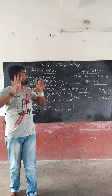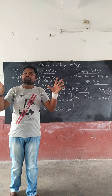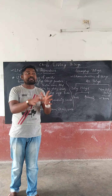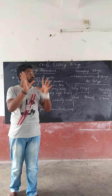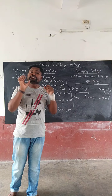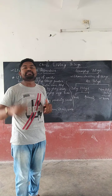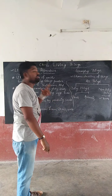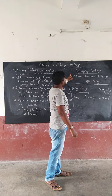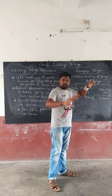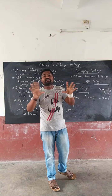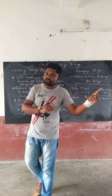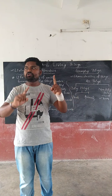After going through all the characteristics of living and non-living things, scientists have divided all things into two parts to properly identify them: living things and non-living things.